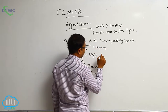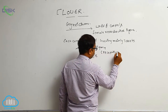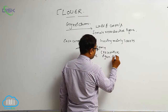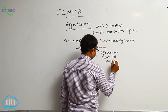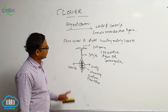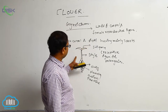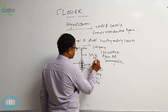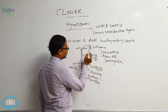Stigma is the receptive organ for pollen grain. So the parts of carpel are mainly three: the first one is the ovary, the middle part is the style, and above that, the broad-like structure is known as the stigma.